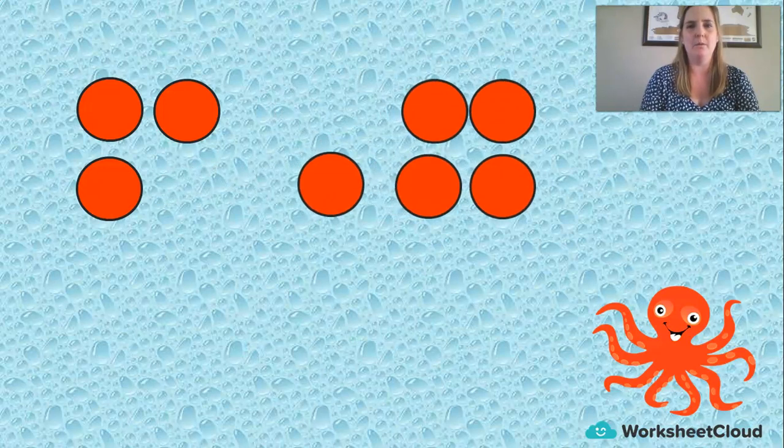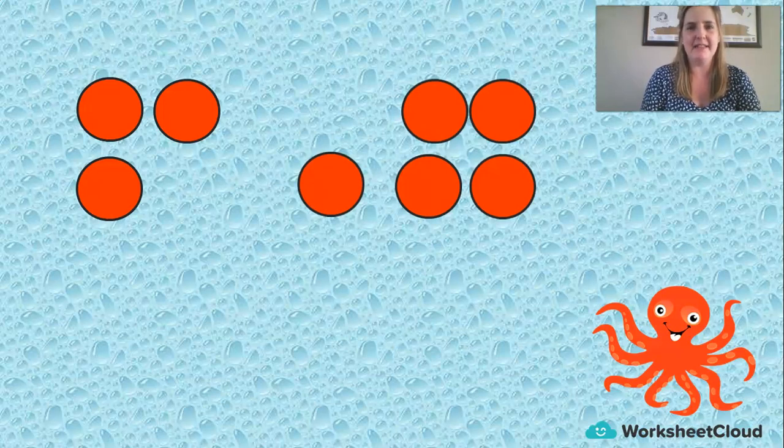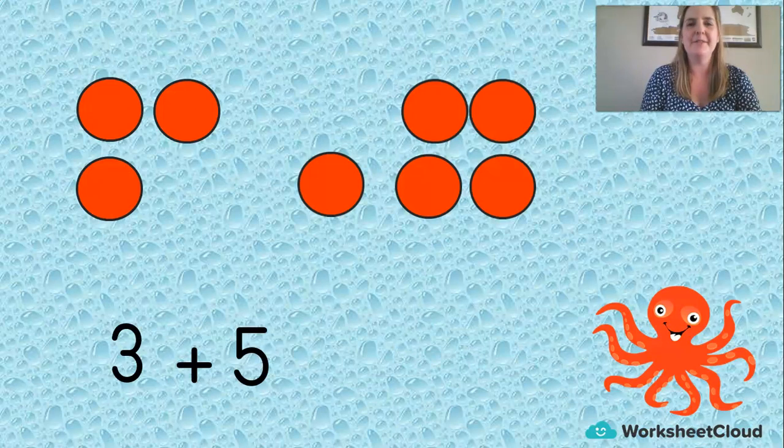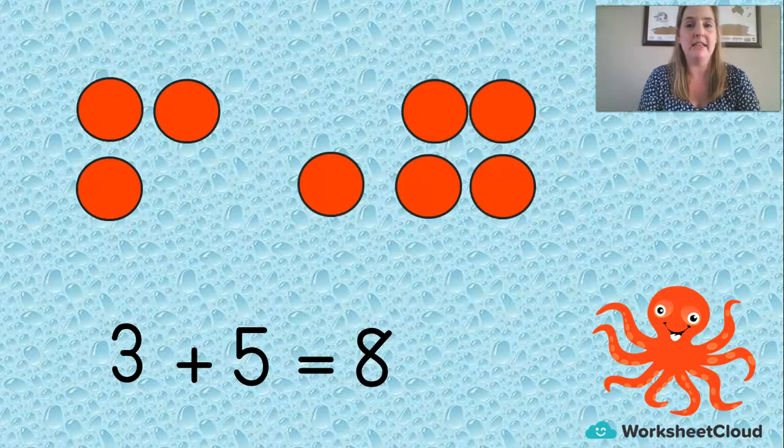How about this one? Whoa! We've got three on this side and how many on the other side? Yes, five. Let's make up that sum. Three plus five equals eight. So if I say to you I've got three, how many more do I need to get to eight? The answer is five. If I say to you I've got five, how many more do I need to add to get to eight? The answer is three.